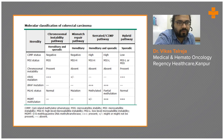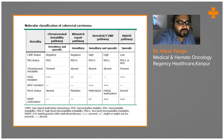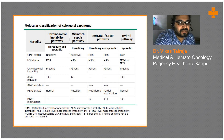In the second pathway — the mismatch repair (MMR) pathway — the CIMP status is again negative, but MSI is unstable, and chromosomal instability is absent. KRAS mutation may or may not be present, BRAF is negative, and MLH1 mutation is usually present. The high MSI status and MLH1 mutation are the hallmarks of this pathway.